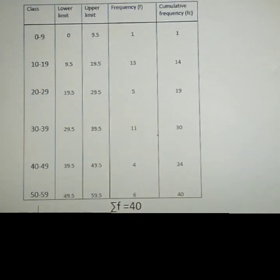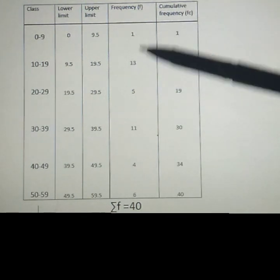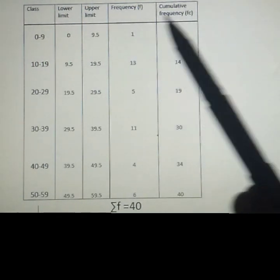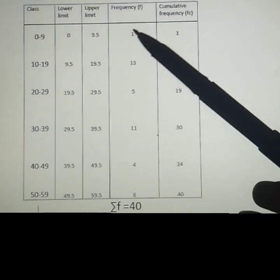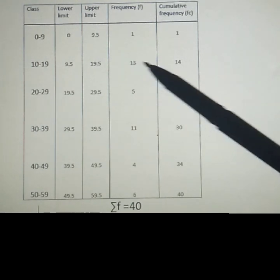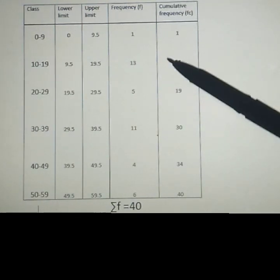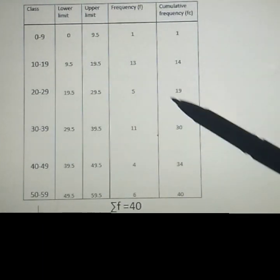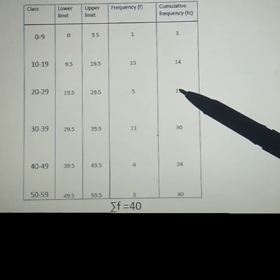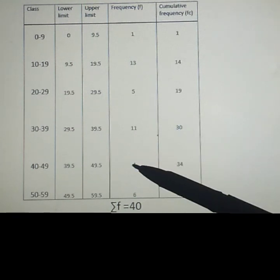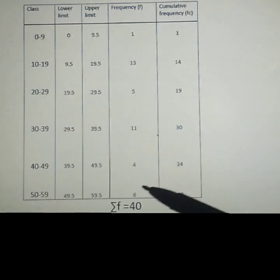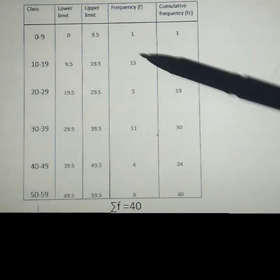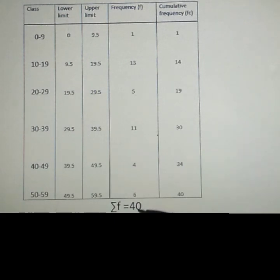Subtracting and adding 0.5 for each class boundary. The frequency column is already given. Now for the cumulative frequency: we add subsequent frequency values. Start with 1, then 1 plus 13 gives 14, then 14 plus 5 gives 19, then 19 plus 11 gives 30, then 30 plus 4 gives 34, then 34 plus 6 gives 40. That's how to fill the cumulative frequency column.